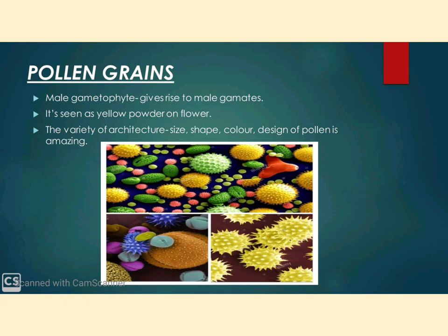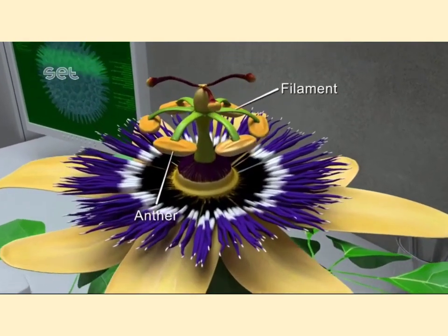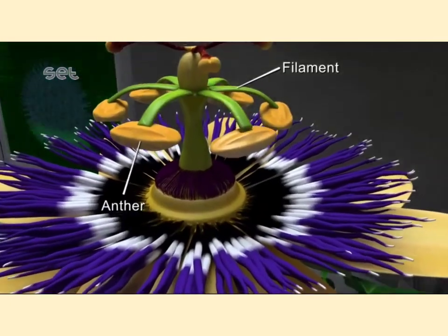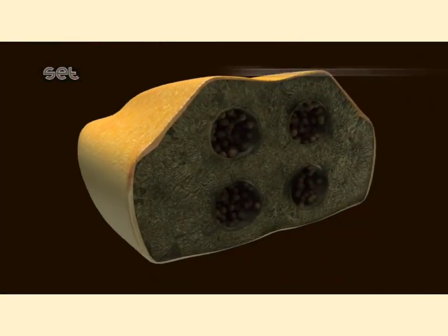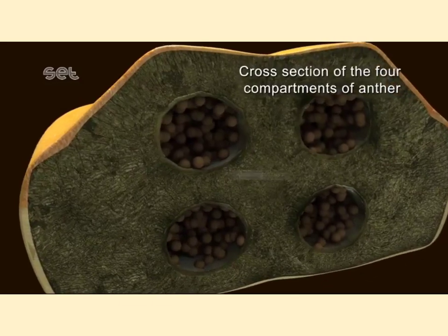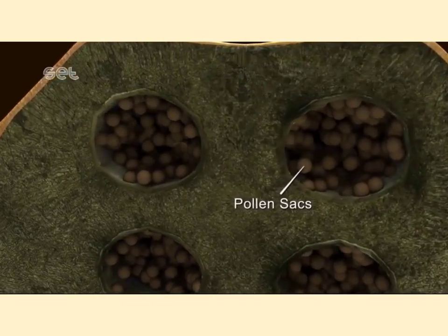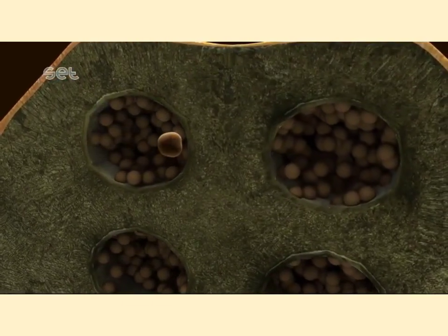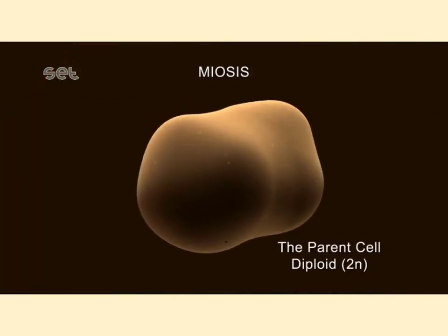Let us try to locate how the pollen can be obtained from a flower. A flower consists of anther and filament. In the cross section of the anther, we can find four microsporangia, i.e., pollen sacs. In each pollen sac, we may find a pollen grain, i.e., a microspore mother cell, which is enclosed in a structure.